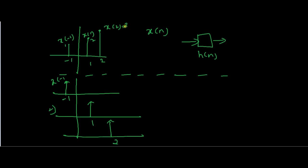The first step is representing the signal as a number of impulses. As you can see in this figure, below the dotted lines I have drawn three figures with impulses at various times, just as in X(N). In X(N) we have three values at N equals minus 1, 1, and 2. So at N equals minus 1 I have drawn one impulse, at N equals 1 I have drawn one impulse, and at N equals 2 I have drawn one impulse. If we add all these three figures below the dotted lines we will end up with X(N).